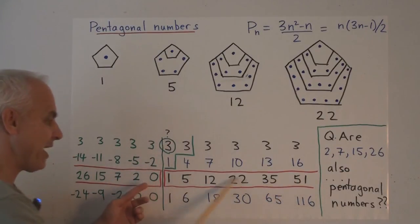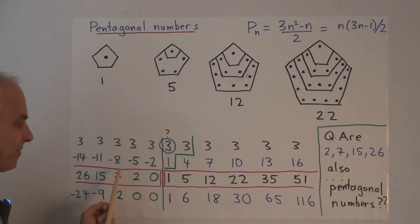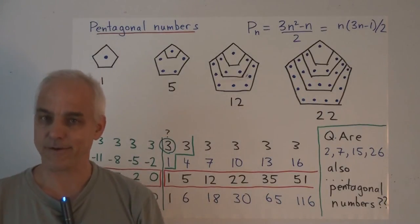Now what happens to the pentagonal numbers themselves when we extend them? Here there's a 1. Here there's a 1. There must be a 0 here. And 2 plus minus 2 is 0. That's got to be 2. That's got to be 7 in order for 7 plus minus 5 to equal 2. That's got to be 15. That's got to be 26. And now it seems as if we're getting another second series of pentagonal numbers.